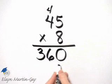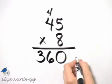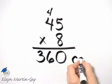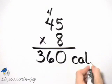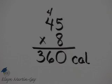And what does this represent? This represents the number of calories in eight tablespoons of sugar.